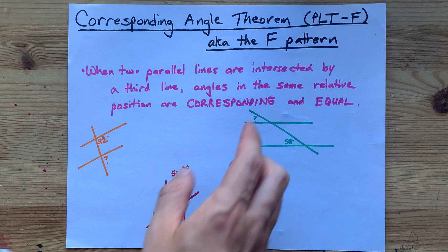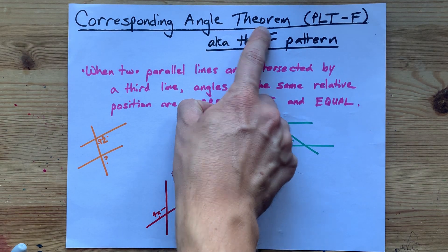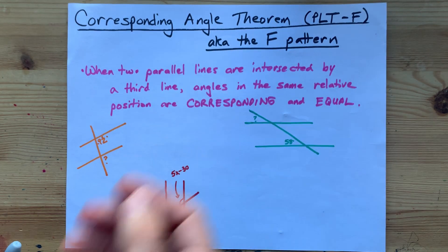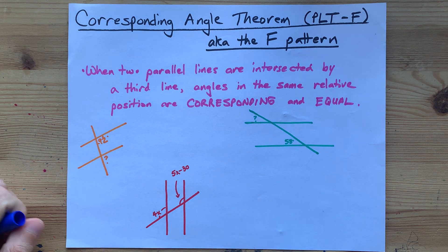The F itself needs to have the two parallel lines making the horizontal part of the letter in order for this to work.